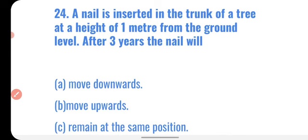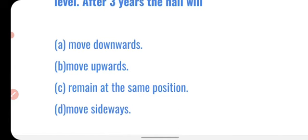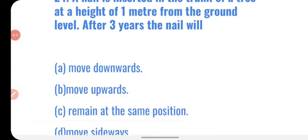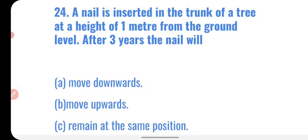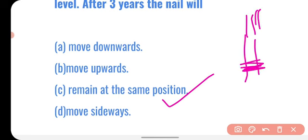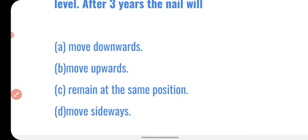Next question: a nail is inserted in the trunk of a tree at a height of one meter from the ground. After three years the nail will — move downward, move upward, remain at the same position, or move sideways? Since plants grow from the apical meristem at the tip, the nail will remain at the same position — the upper part of the plant grows upward but the nail's position does not change.